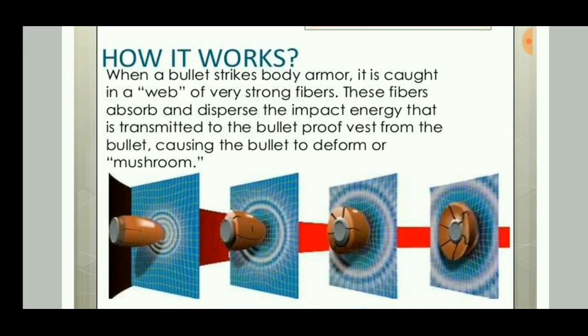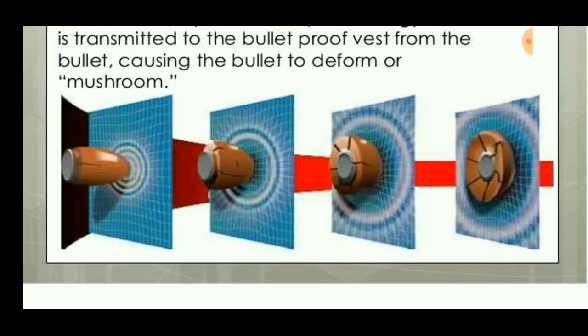When a bullet strikes body armor, it cuts into a web of very strong fibers. These fibers absorb and disperse the impact energy, transmitting it throughout the bulletproof vest, so that the bullet tends to deform.